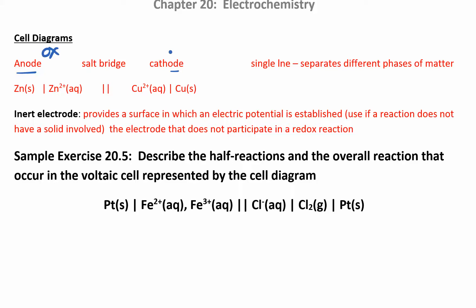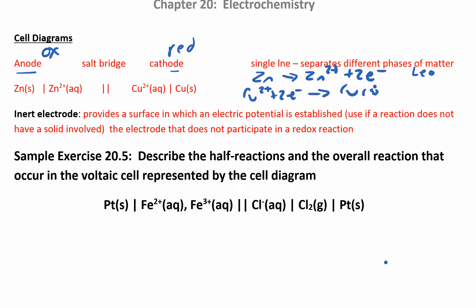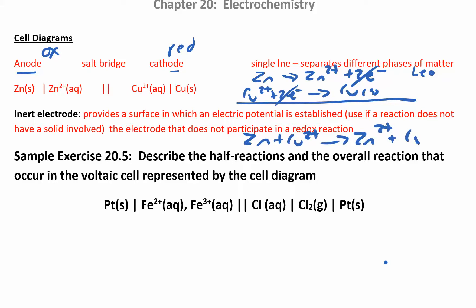Oxidation happens at the anode, reduction at the cathode. You can write the oxidation half reaction on the left and the reduction half reaction on the right. On the left: zinc goes to zinc 2+ — since there are no hydrogens or oxygens, just add electrons. Zinc is definitely losing electrons, so it's the anode. On the cathode side, copper 2+ plus two electrons gives copper solid. The electrons gained equal the electrons lost — two and two — so the overall reaction is: Zn(s) + Cu²⁺(aq) → Zn²⁺(aq) + Cu(s).